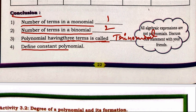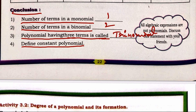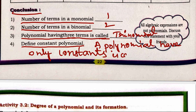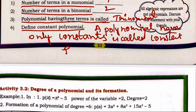Now let's define a constant polynomial. A polynomial that has only constant values — no variables — is called a constant polynomial.